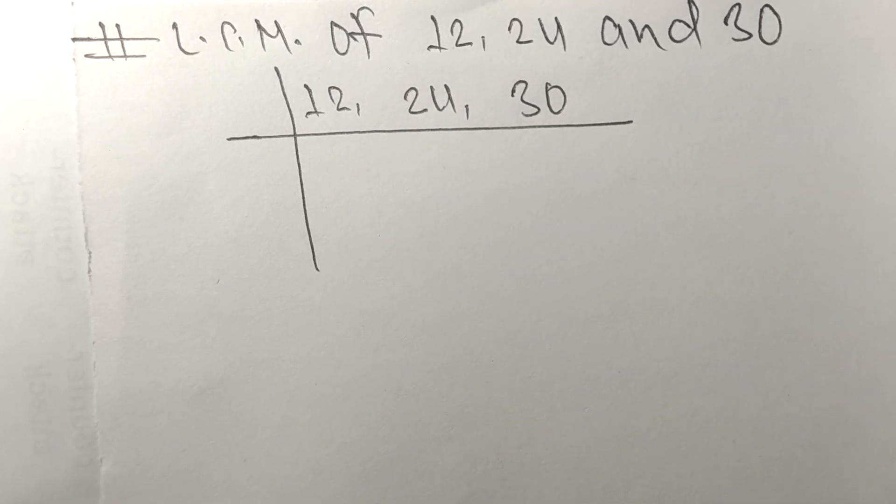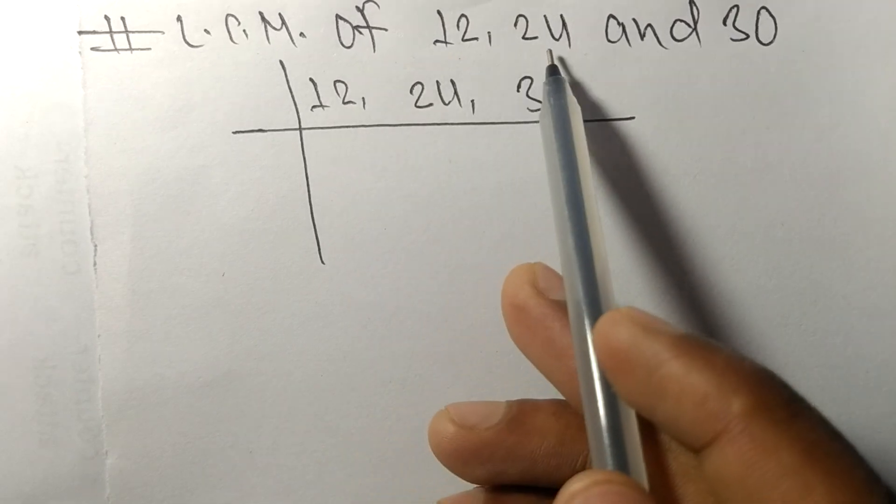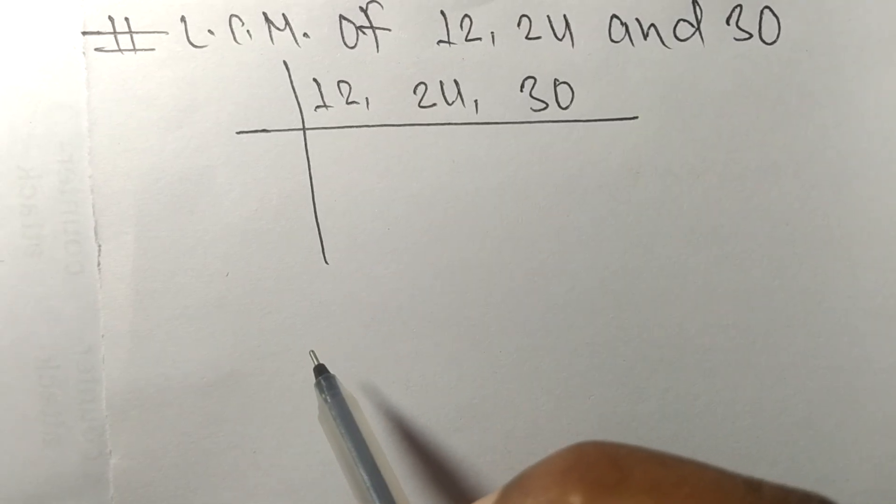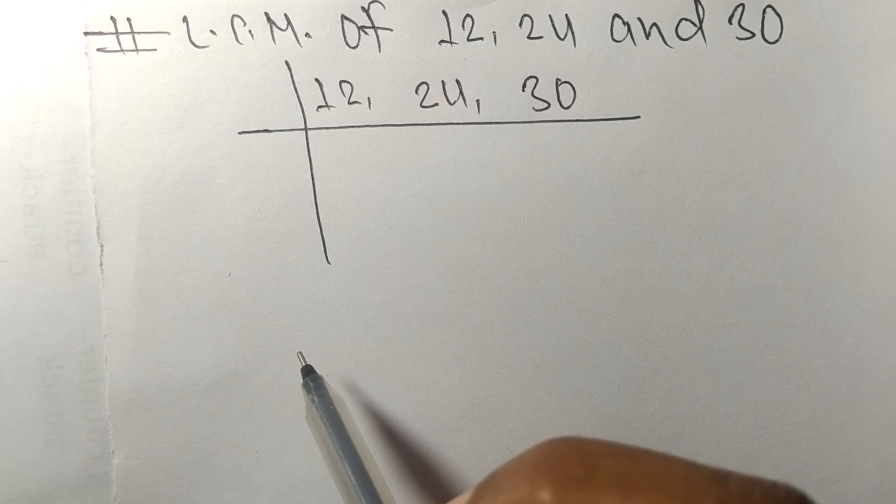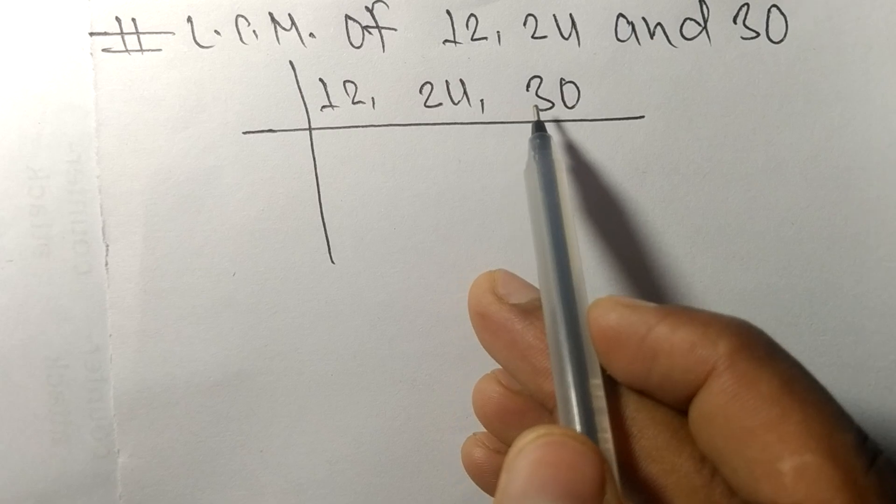So today in this video, we shall learn to find the LCM of 12, 24, and 30. To find LCM, we have to choose the lowest number that can exactly divide at least any two of these numbers.